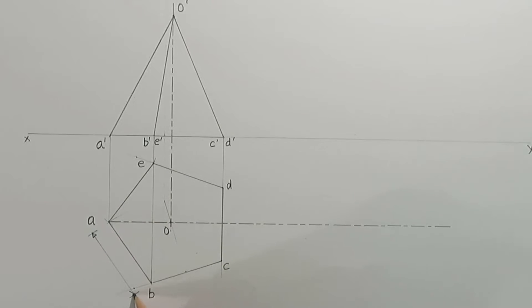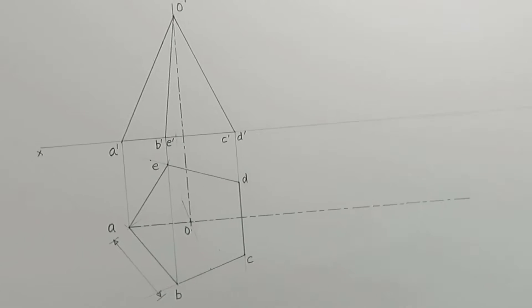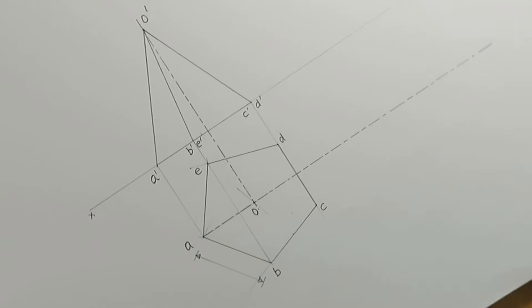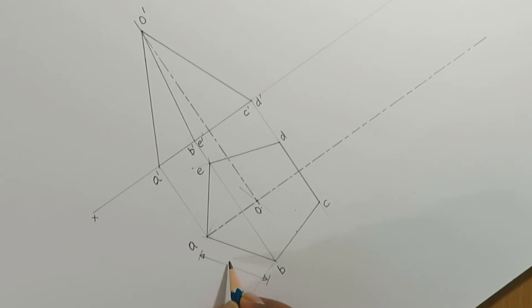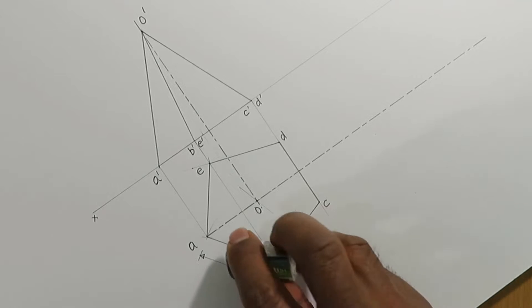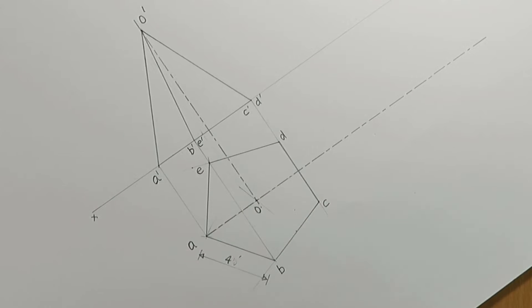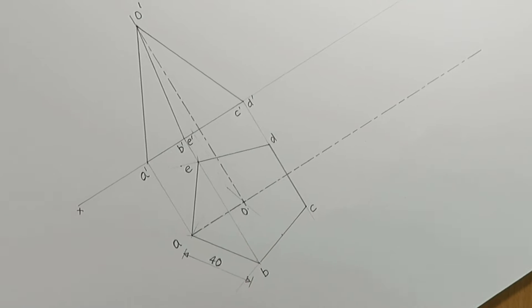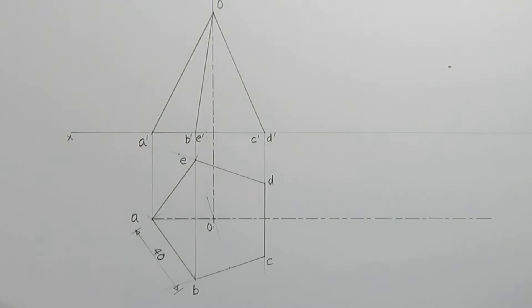For dimensioning, use either the aligned or the unidirectional dimensioning system. Do not mix both systems in one drawing. Here we will use the aligned dimensioning system.